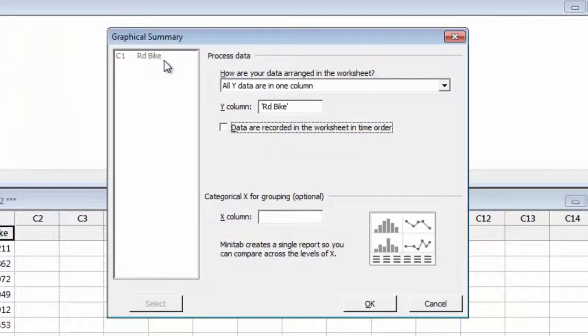Enter Road Bike as the Y column, and check the box to tell the Assistant these data were recorded in time order.